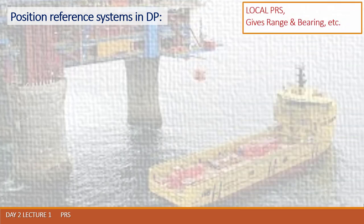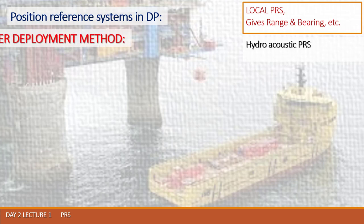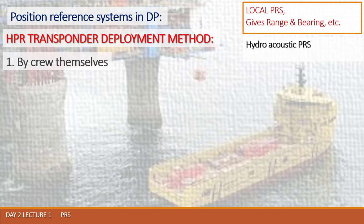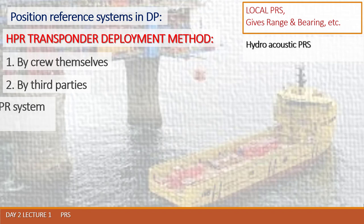The next topic in our program is methods of deployment of HPR transporters — in other words, how the beacon is delivered to the operational sea bottom. If the crew is going to use only one beacon and the hydroacoustic arrangement requires only one beacon, the beacon may be delivered to the sea bottom by the crew themselves. If the HPR system arrangement requires many beacons at the sea bottom, a third party may be involved for installation, and calibration will likely also be performed by those third parties. The method in use depends on the type of HPR system arrangement.